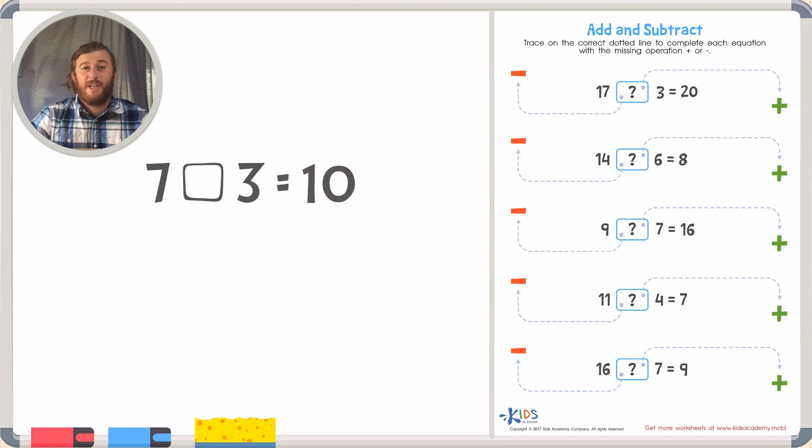So one way you can solve these problems is by looking at the first and the last number. If the first number is smaller than the last number, meaning the last number is bigger, you need to do something to that first number to make it grow.